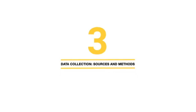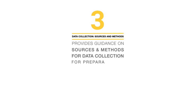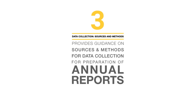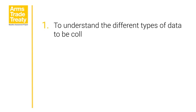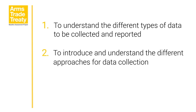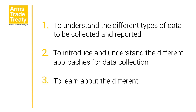Module 3: Data Collection Sources and Methods. Module 3 provides guidance on sources and methods for data collection to enable States parties to fulfil their obligation to provide an annual report on authorisations and/or actual arms exports and imports in accordance with Article 13, Paragraph 3 of the Arms Trade Treaty. This module provides examples of documents and records that can be utilised to prepare an ATT annual report. These materials can also be used to submit an annual report to the United Nations Register of Conventional Arms. The module has three aims: to understand the different types of data to be collected and reported, to introduce and understand the different approaches for data collection, and to learn about the different challenges and solutions for reporting.